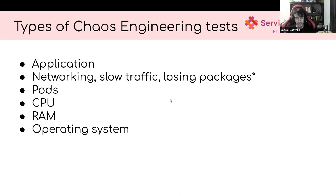Here are some examples of where we can apply chaos engineering tests. First, in the application — at a software level — not working by slowing traffic, traffic losing packages, DNS failures, pods killing them, producing some failures in the pods, the CPU, ground memory, and operating systems, as some examples.